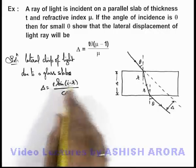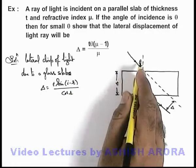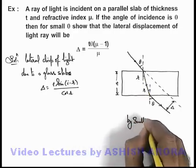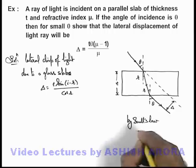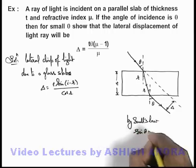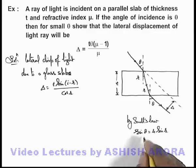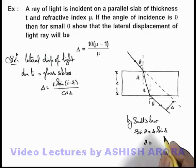Here the value of incidence angle we are already given with θ, and r we can calculate by Snell's law. From Snell's law we can write sin θ = μ sin r, and for small angles we can write sin θ ≈ θ and sin r ≈ r.